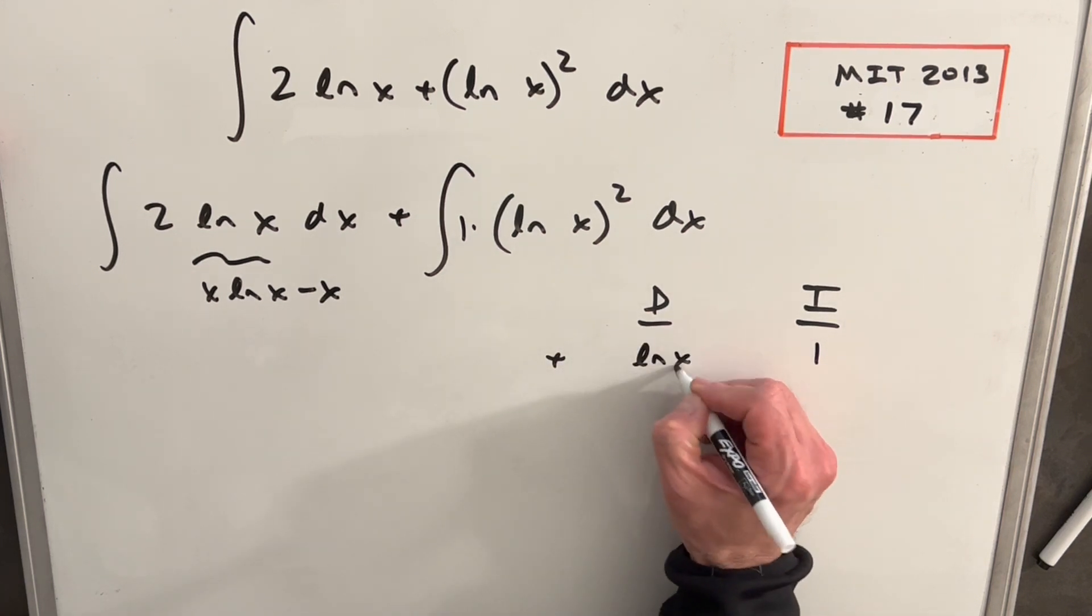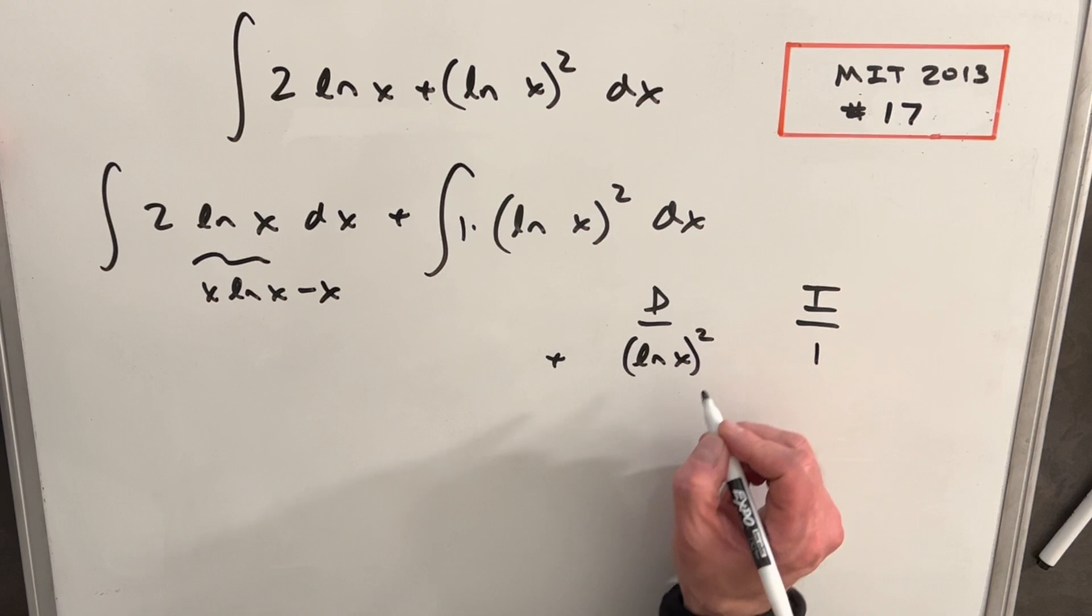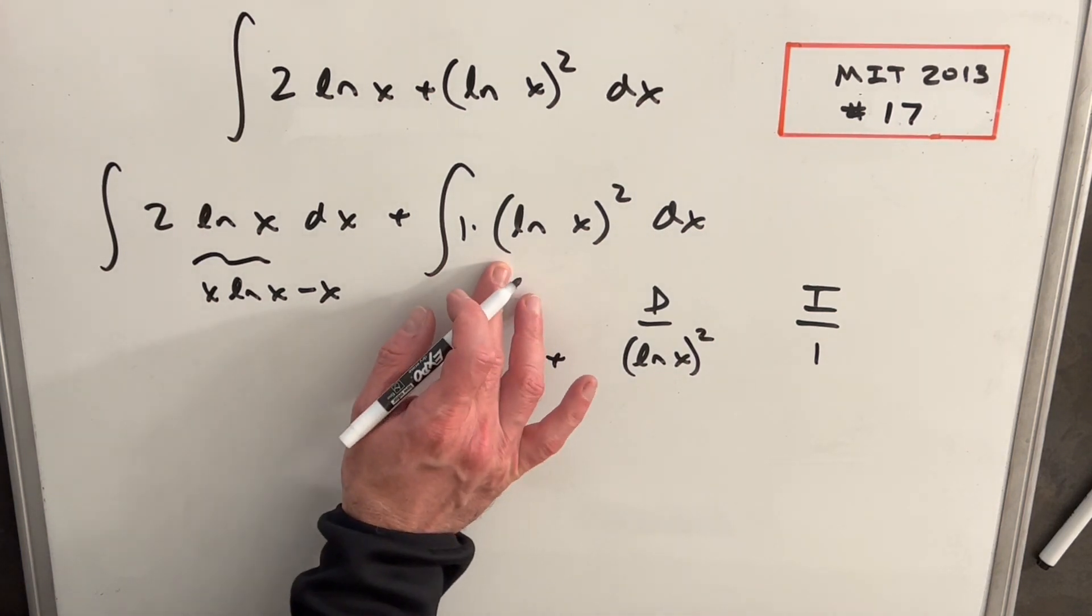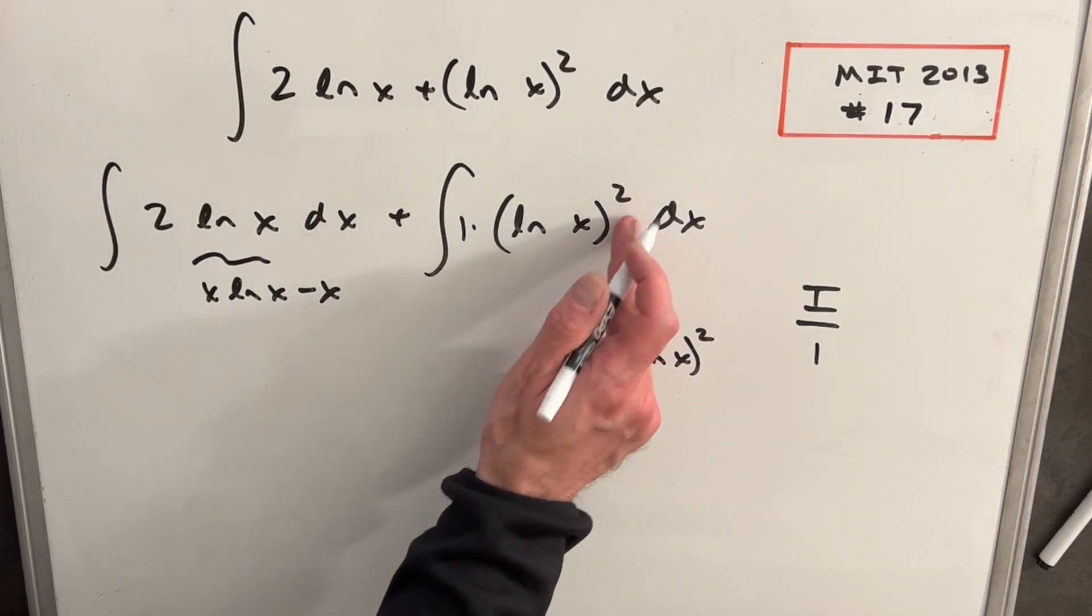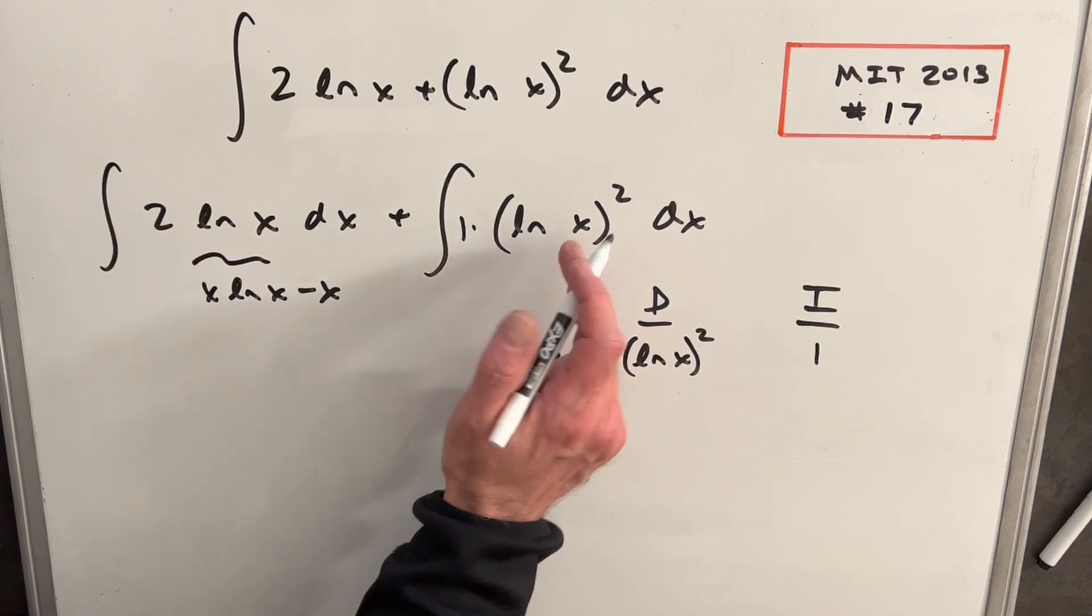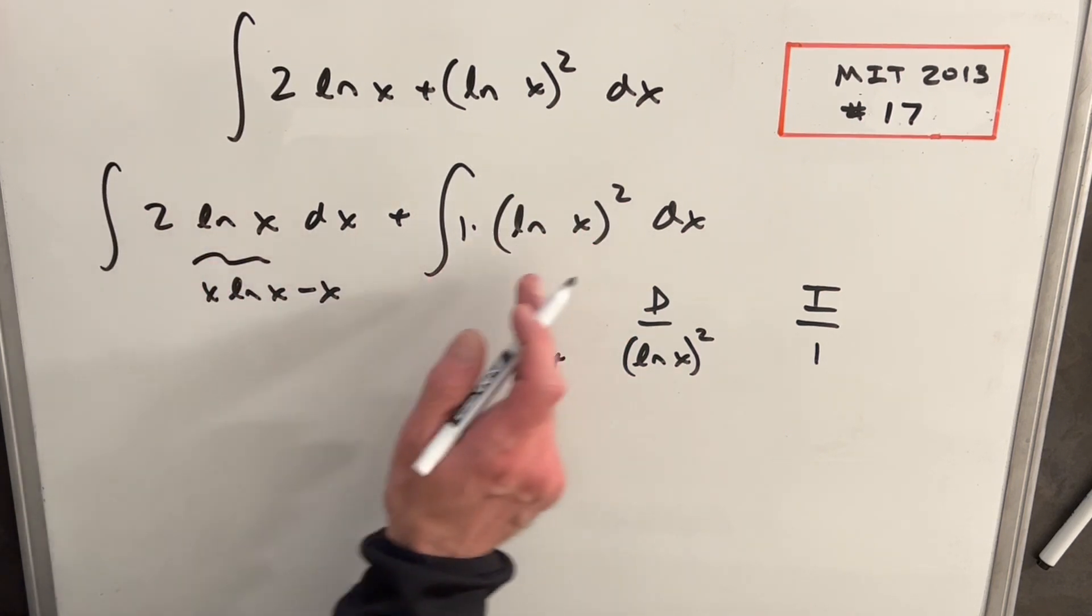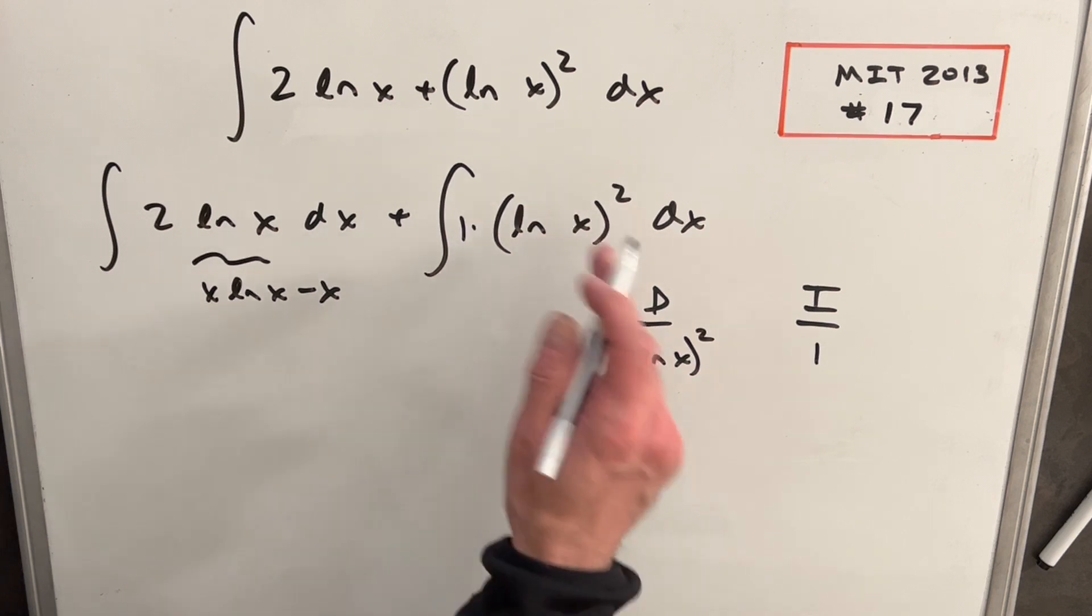And then I'm going to differentiate ln x all squared. Notice the parentheses are really important here. If the square was on the x, we could pull it out front. But the parentheses means we're squaring the whole thing.